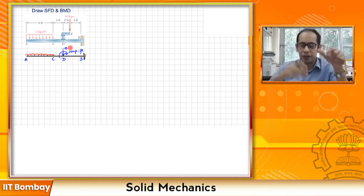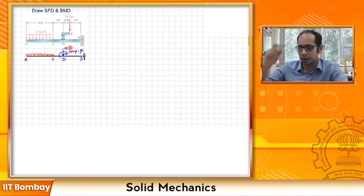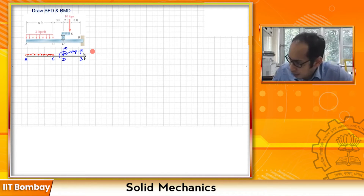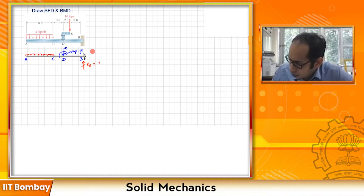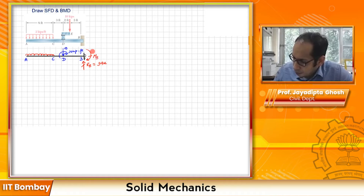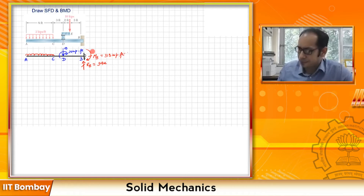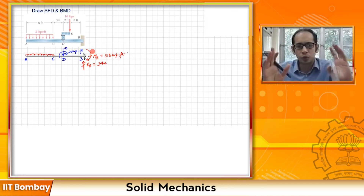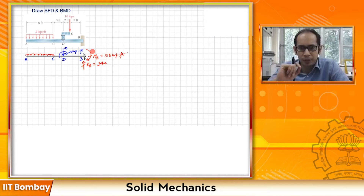For this beam, the reactions have already been calculated. There is a vertical reaction and a moment at point B. From equilibrium, the reaction R_B comes out as 34 kips, and the reaction moment M_B comes out as 318 kip-feet. Now we have all the tools to start drawing the shear force diagram and the bending moment diagram.